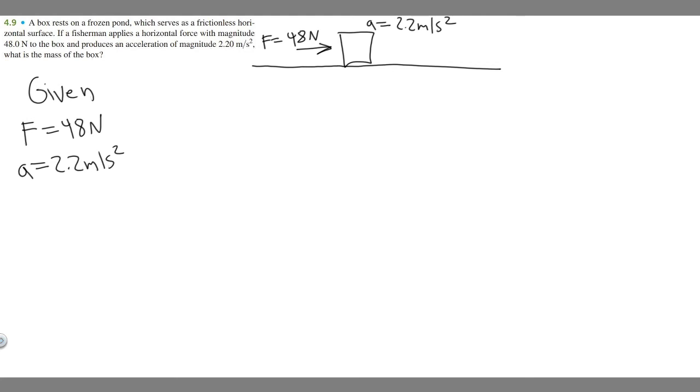And then what are they asking us for? They're asking for the mass of the box. So I'm going to write that m equals question mark, because that's what we're trying to find. So in order to solve this, you need to know this formula, which is force equals mass times acceleration. This formula we can use to solve for mass if we're given acceleration and force.